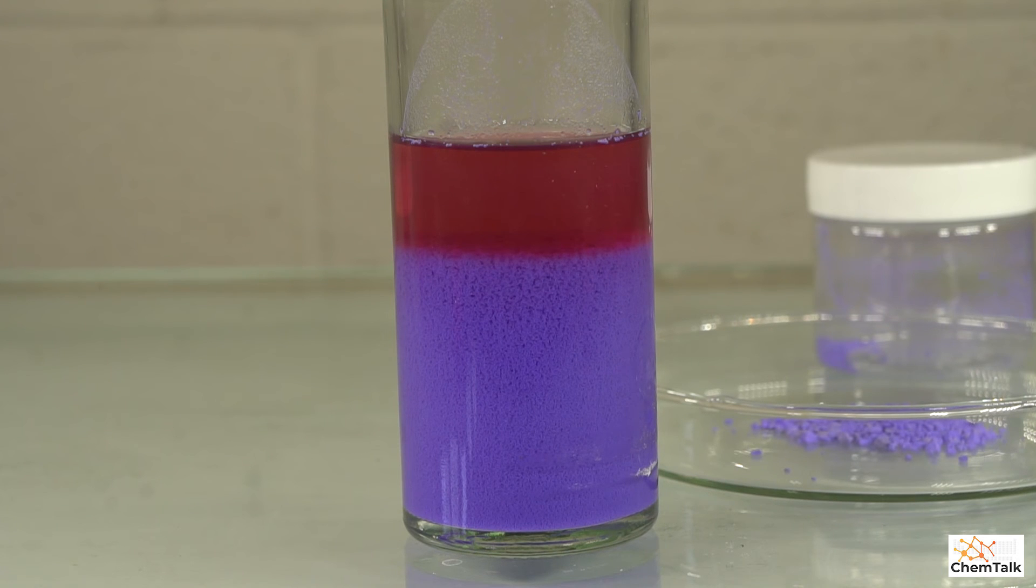And as soon as I did that, the purple precipitate settled to the bottom two thirds of the container. And there's still some cobalt sulfate in solution, which is why you see the reddish color at the top.